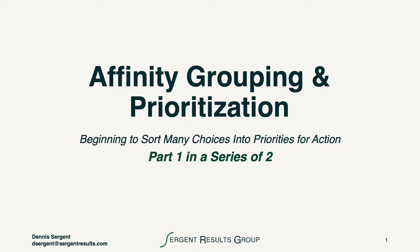Hi, this is Dennis Surgent. I'd like to talk to you this afternoon about affinity grouping and prioritization — it's how we begin to sort the many choices we have into priorities for action. This is the first in a series of two.